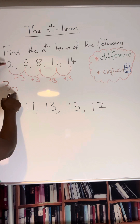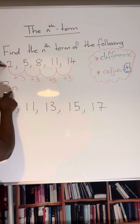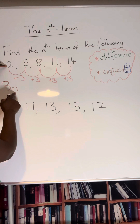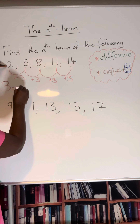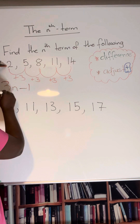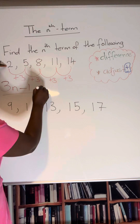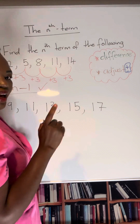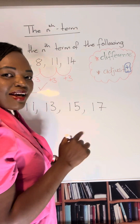At the minute, look, you've got 2. 3 times 1 is 3. To get to 2 you need to take away 1. So therefore your nth term is 3n − 1.